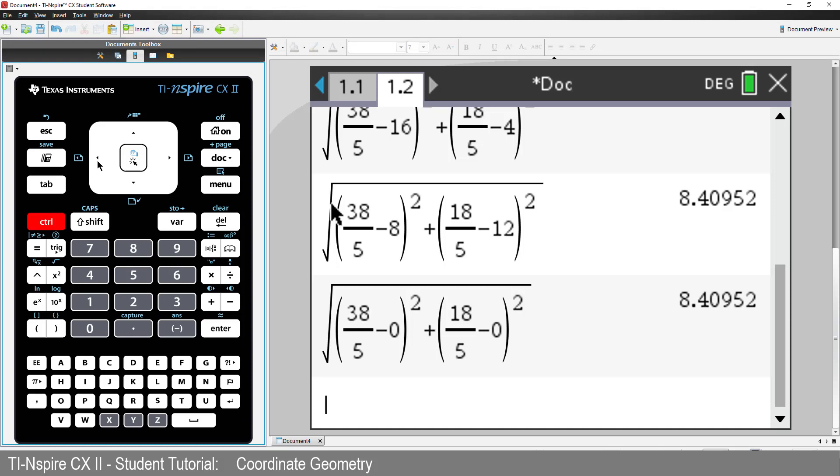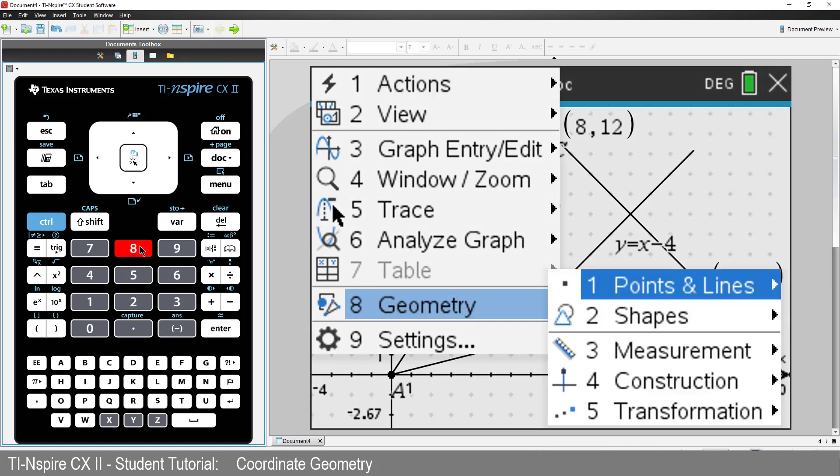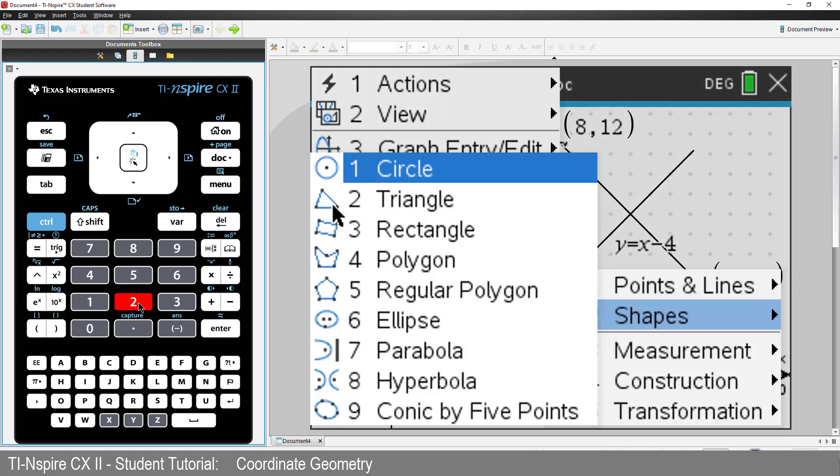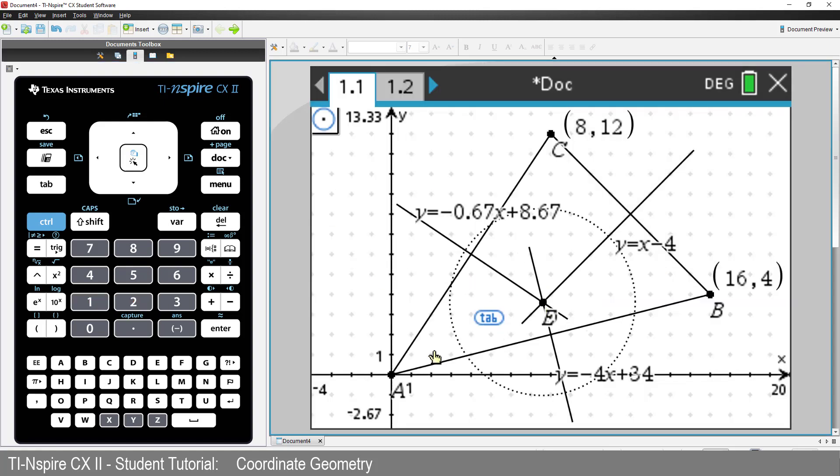So let's go back to the graphs application. That means we can draw a circle centered at D passing through points A, B, and C, the vertices of the triangle.